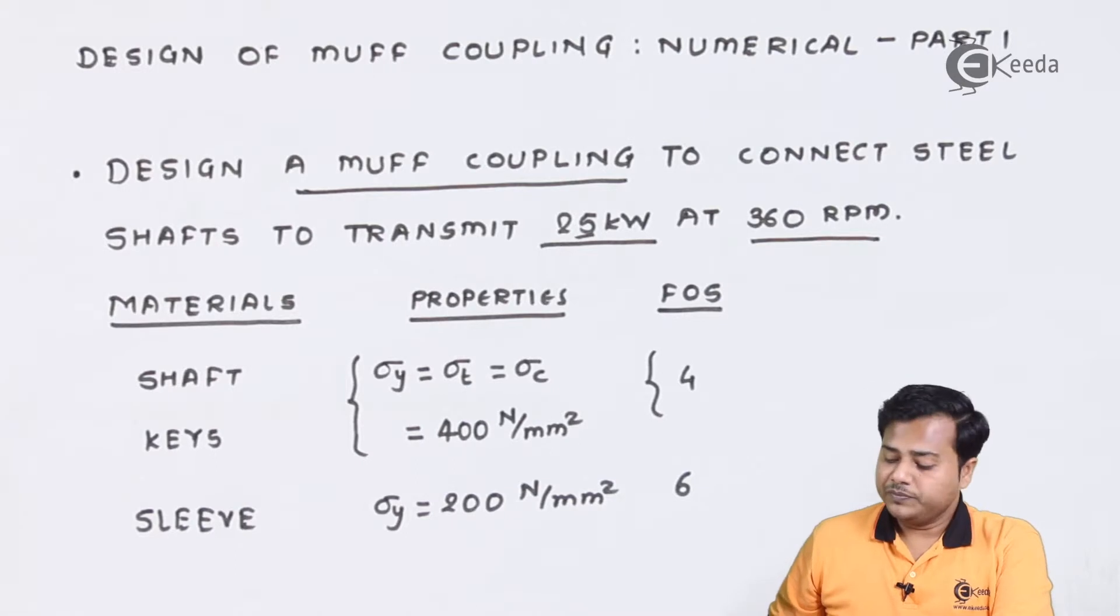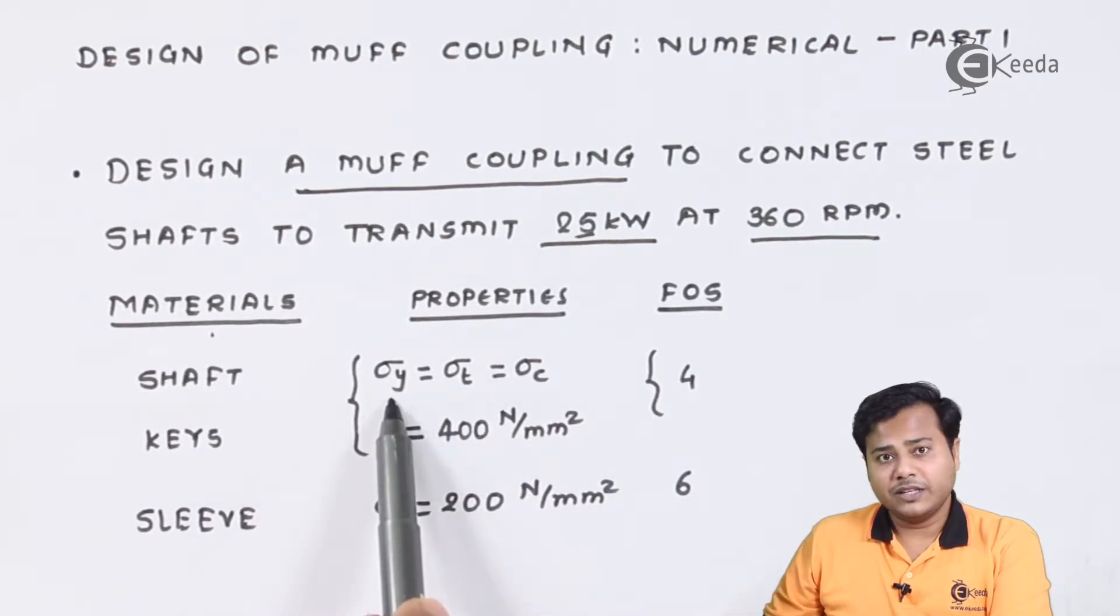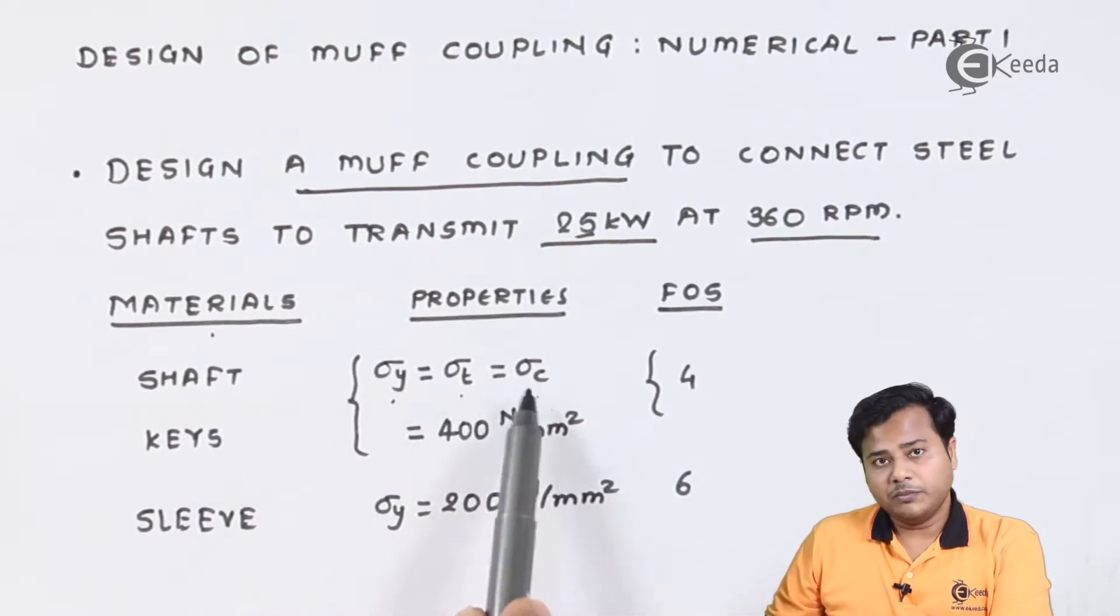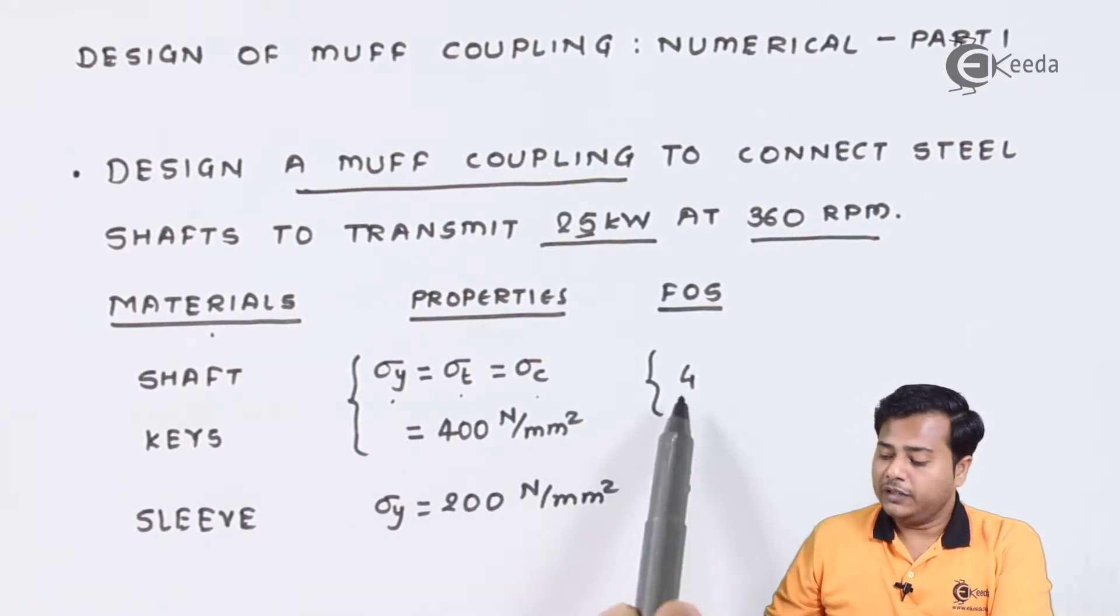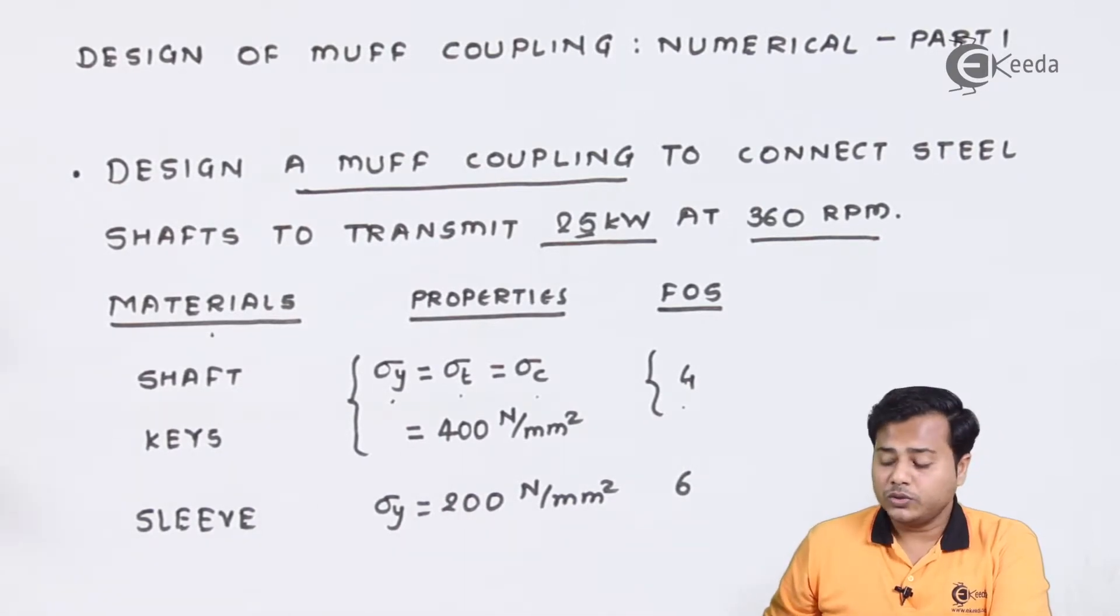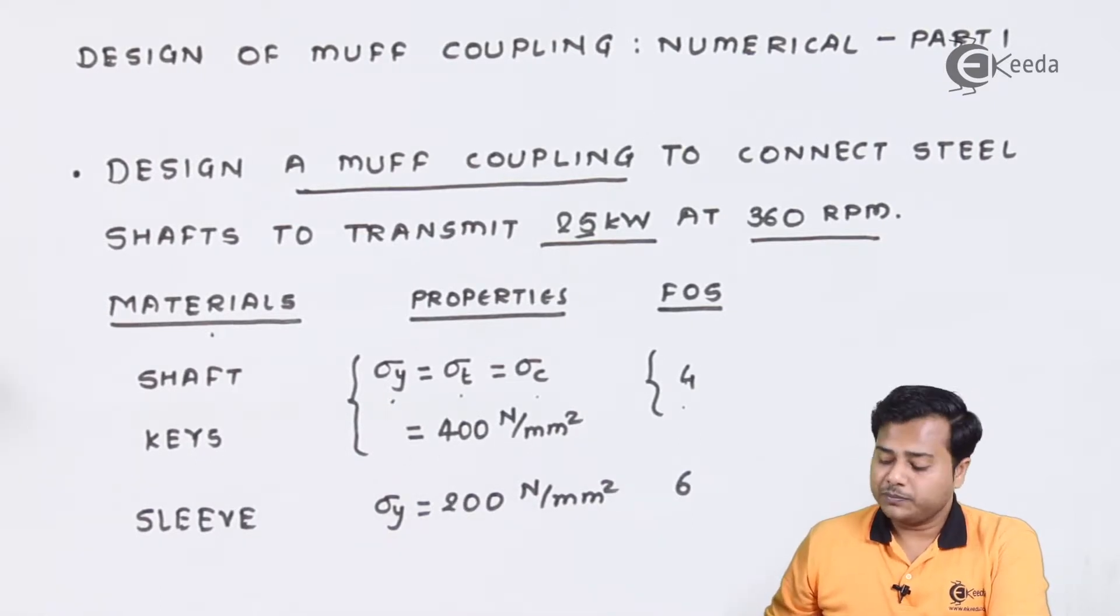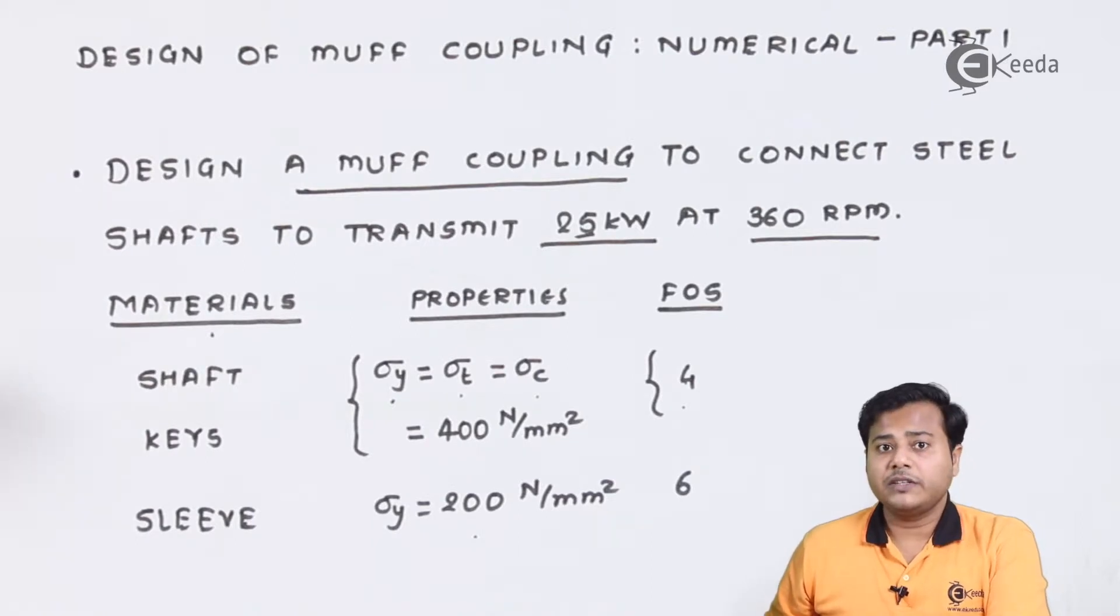They have specified the materials. For shafts and keys, the same material is being used, whose value of yield stress for tension and compression is 400 N per mm². The factor of safety associated is 4. For the sleeve, the properties are 200 N per mm² and the factor of safety is 6.